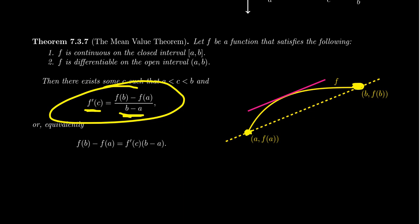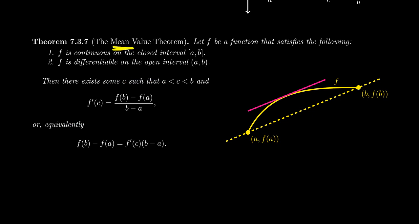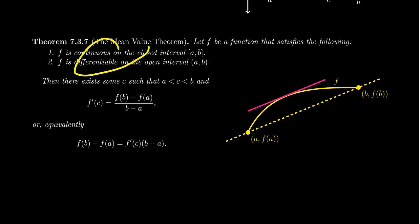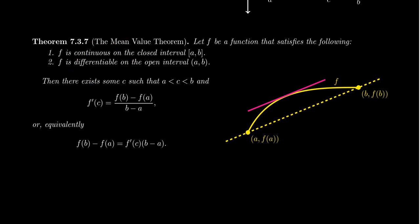By the MVT there exists a tangent line parallel to the secant line — somewhere the instantaneous rate of change equals the average rate of change, which is why it's called the Mean Value Theorem: 'mean' as in average. Again, the MVT is a non-constructive existential statement: if the hypotheses hold, there exists a c with this property, but it only tells you c lives between a and b, not what c actually is.